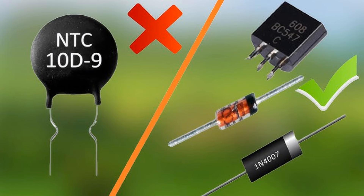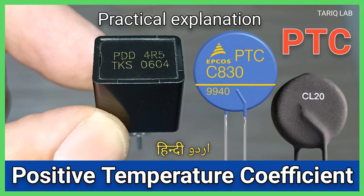Regarding the resistance-temperature relationship: at low temperatures, the resistance of the NTC thermistor is high. As the temperature rises, the resistance drops. This is due to increased thermal energy which excites more charge carriers — electrons or holes — in the material, allowing current to pass more easily. NTC thermistors are highly sensitive to temperature changes; small temperature changes result in significant resistance changes, making them useful for precise measurements.